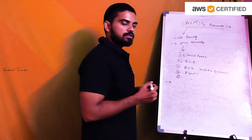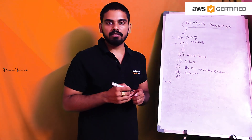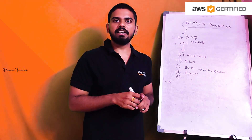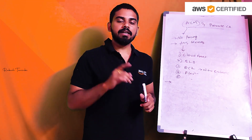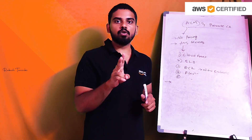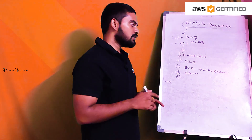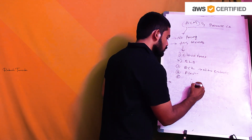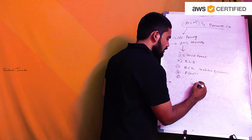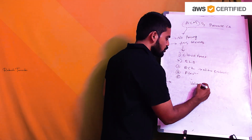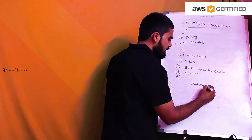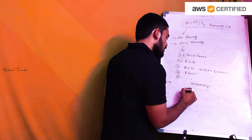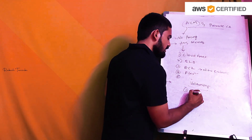We will create a certificate in ACM — we will request a certificate. When creating a certificate, there are two types of validations. We can do any type of validation. The two options in validations are: one is domain validation, and the second is email validation.